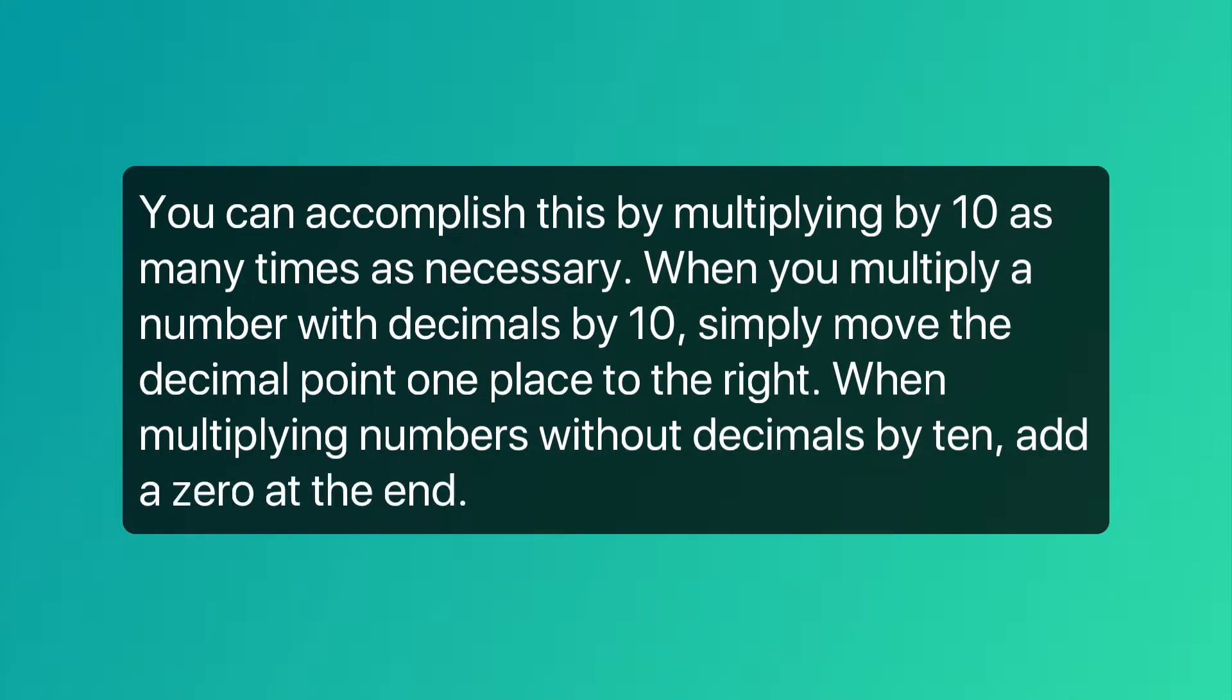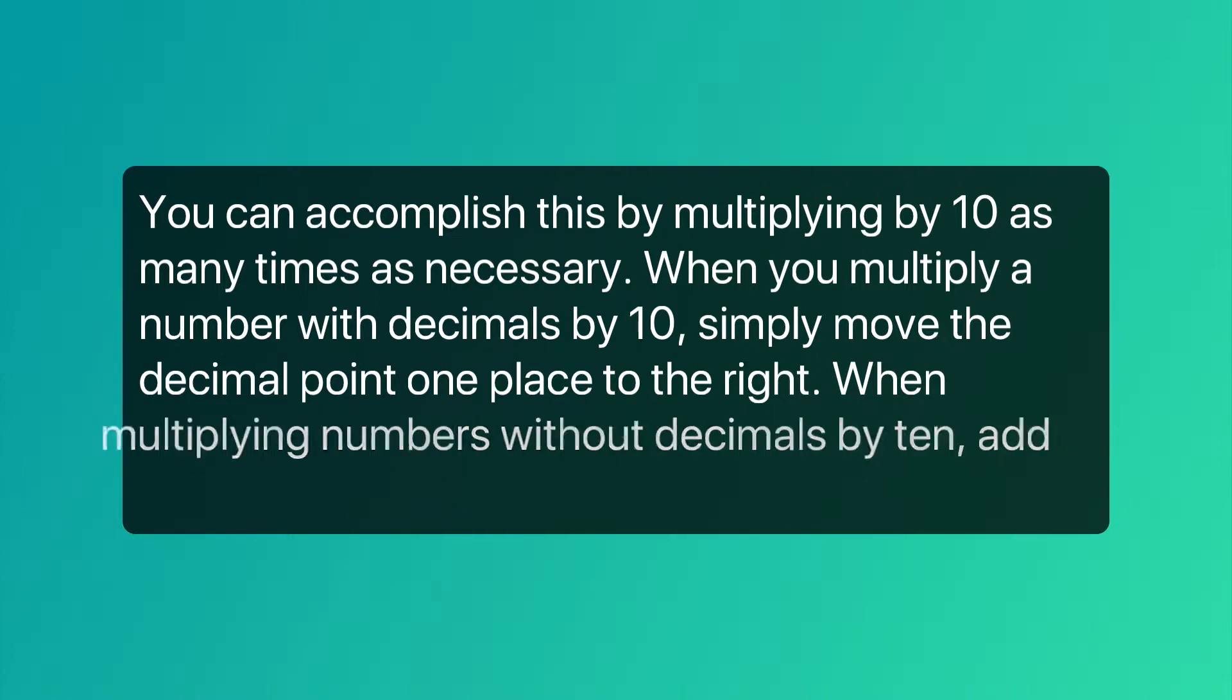You can accomplish this by multiplying by 10 as many times as necessary. When you multiply a number with decimals by 10, simply move the decimal point one place to the right. When multiplying numbers without decimals by 10, add a zero at the end.